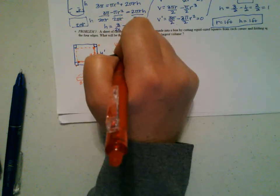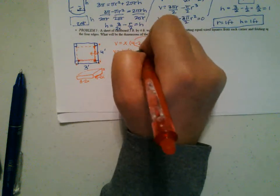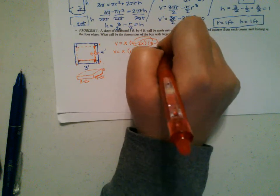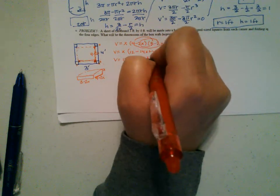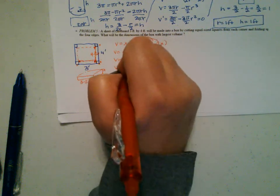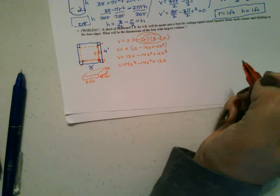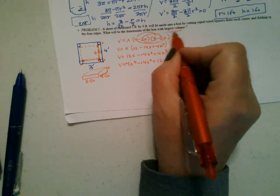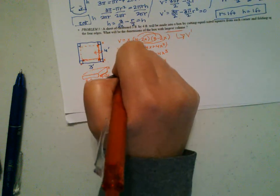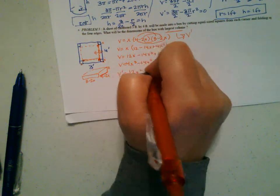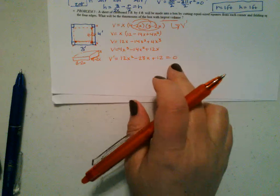The volume of this box is V = X(4 − 2X)(3 − 2X). FOILing the last two factors: 12 − 14X + 4X². Then distributing X gives V = 12X − 14X² + 4X³. To find the largest volume, I need to find V'.